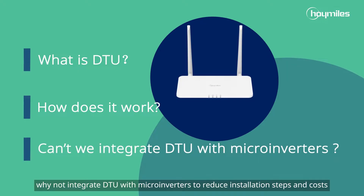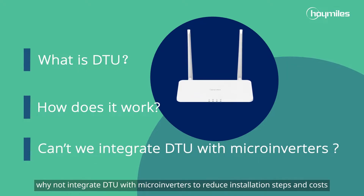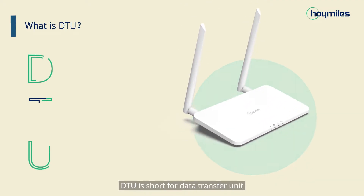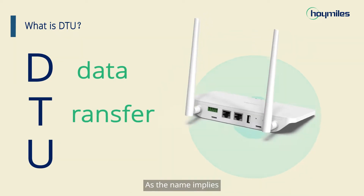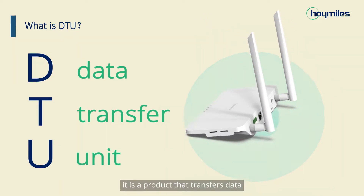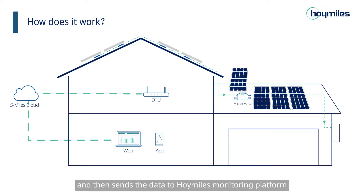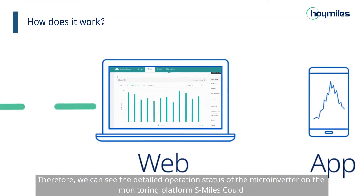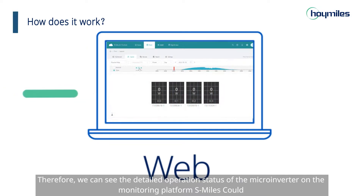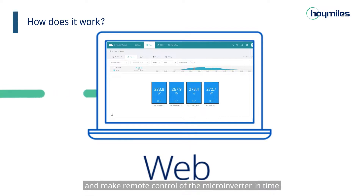Why not integrate DTU with microinverters to reduce installation steps and costs? DTU is short for Data Transfer Unit. As the name implies, it is a product that transfers data. It collects and summarizes the working information and power generation data of the microinverter, and then sends the data to the HoiMiles Monitoring Platform. Therefore, we can see the detailed operation status of the microinverter on the monitoring platform S-Miles Cloud, and make remote control of the microinverter in time.